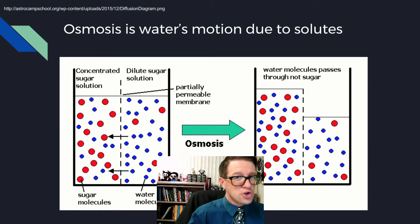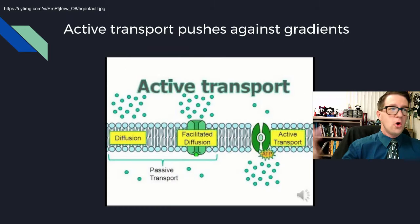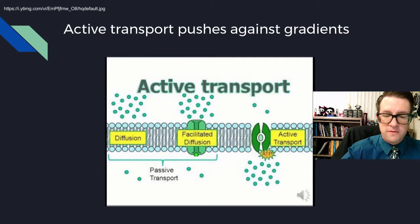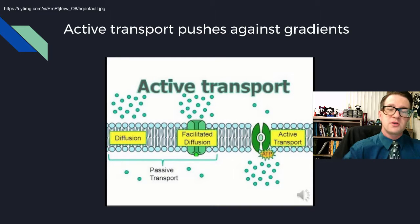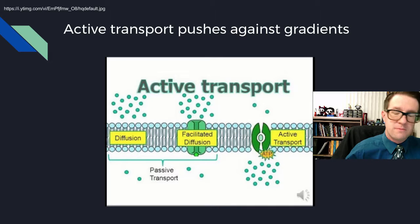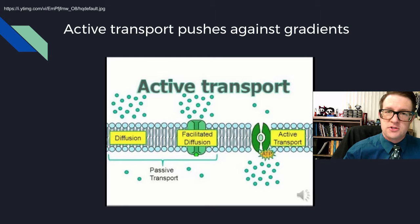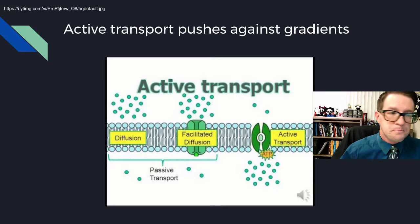But diffusion and osmosis don't tell us everything. We also have a form of movement called active transport. Active transport moves against the concentration gradient — it moves against what is normal.